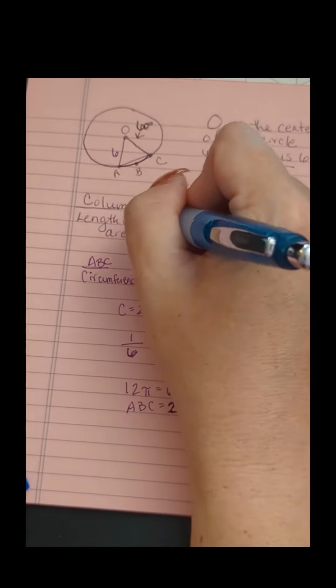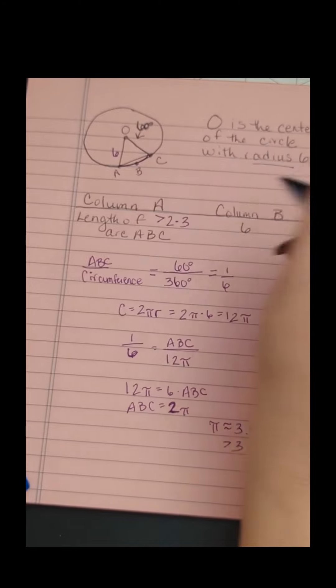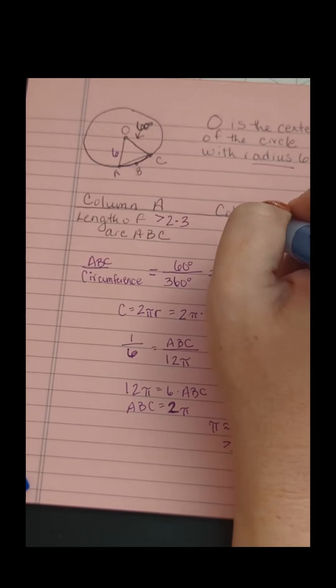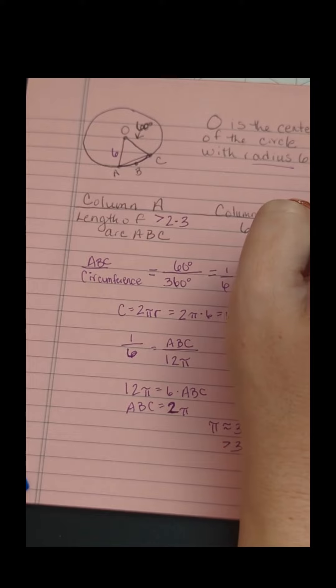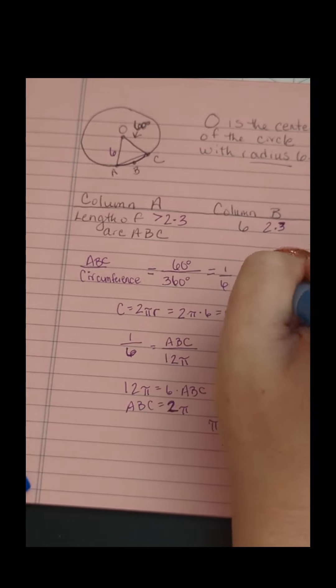So column A is bigger than 2 times 3, while column B is exactly 2 times 3. Therefore column A is greater. The correct answer is A.